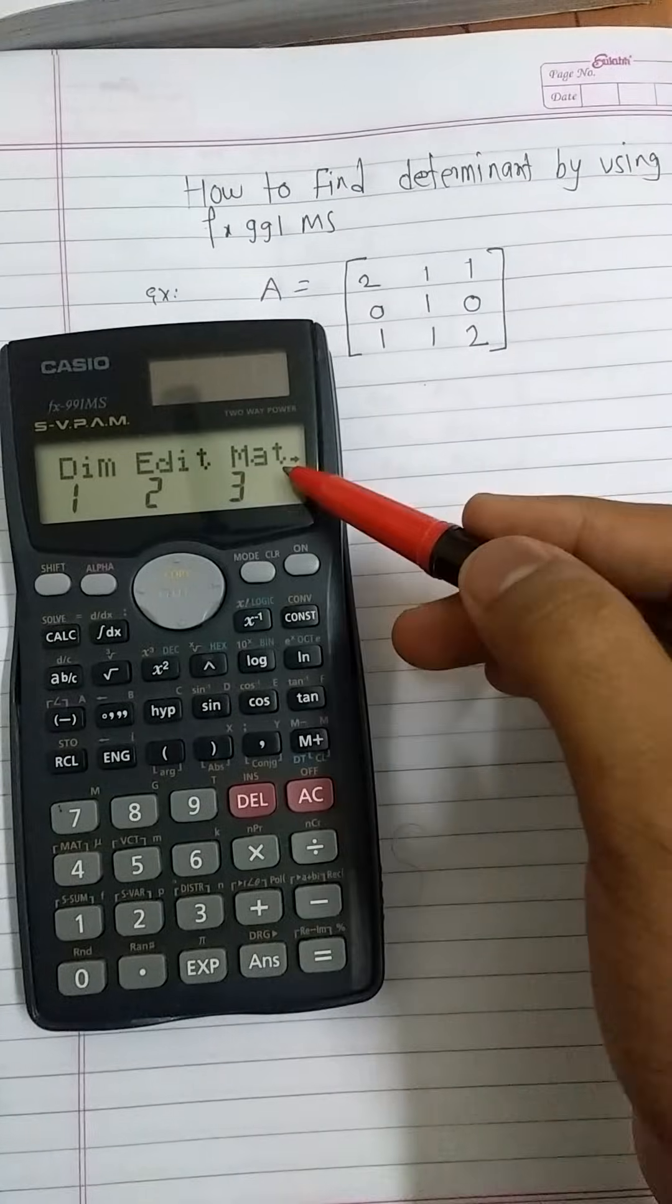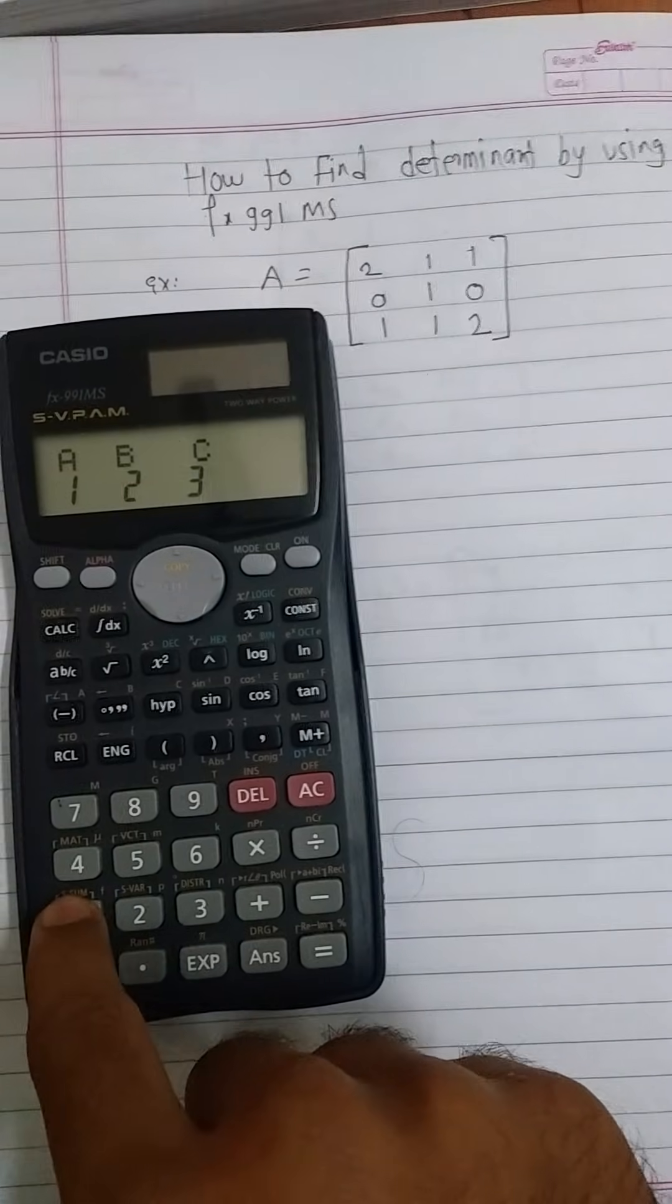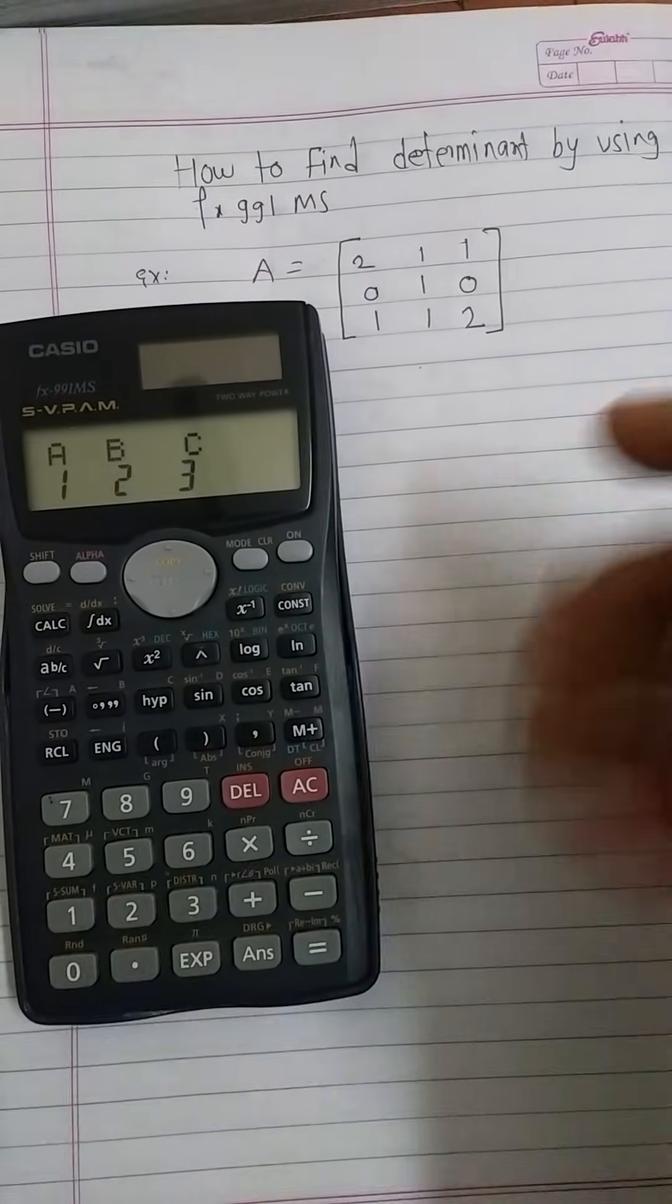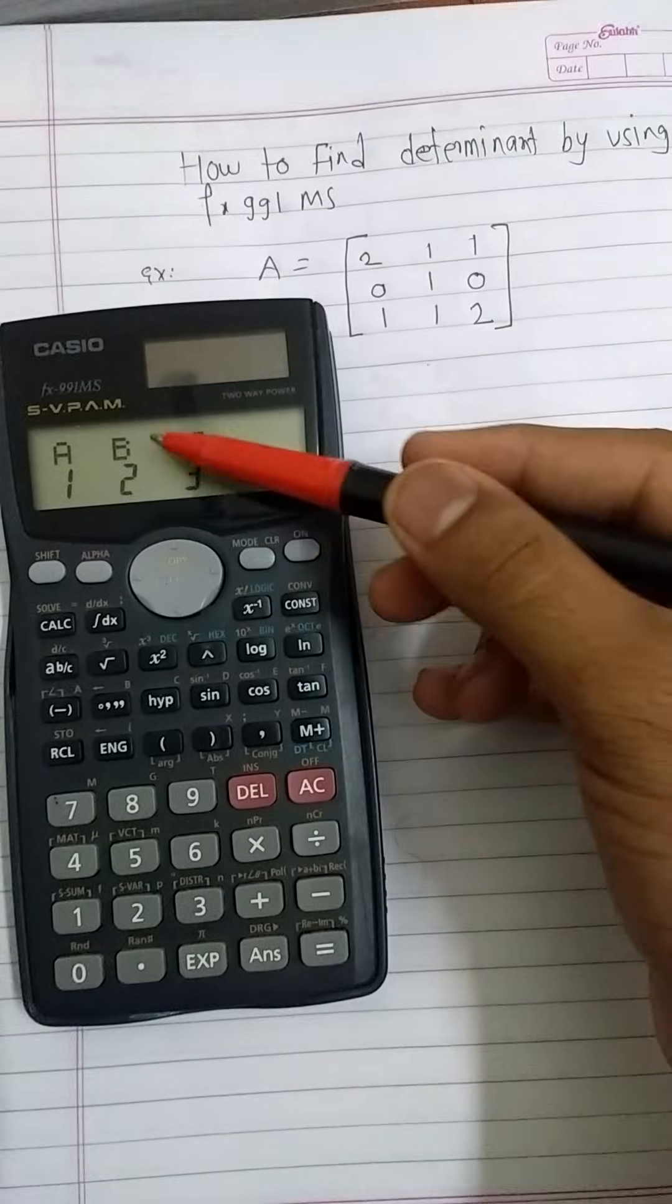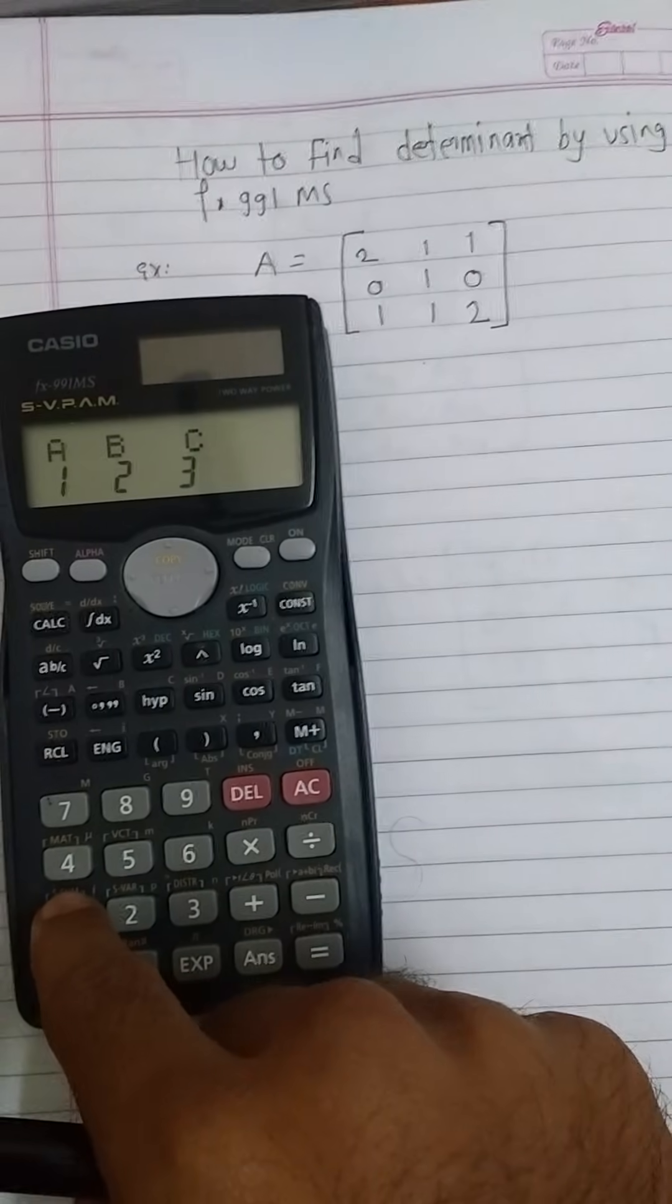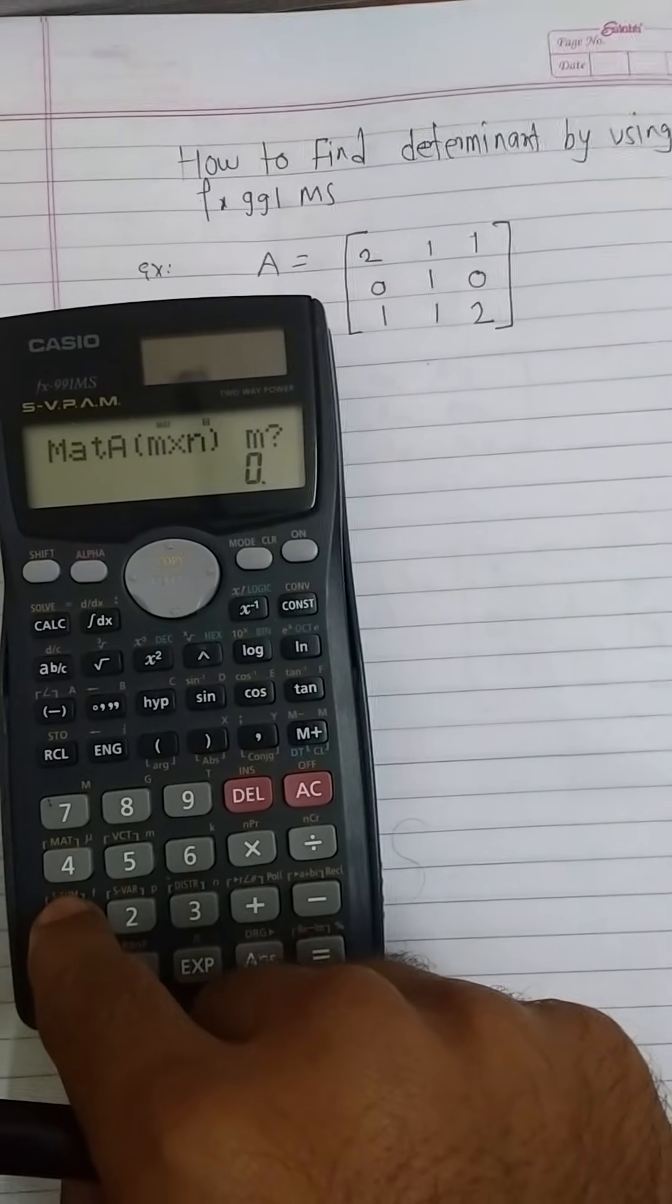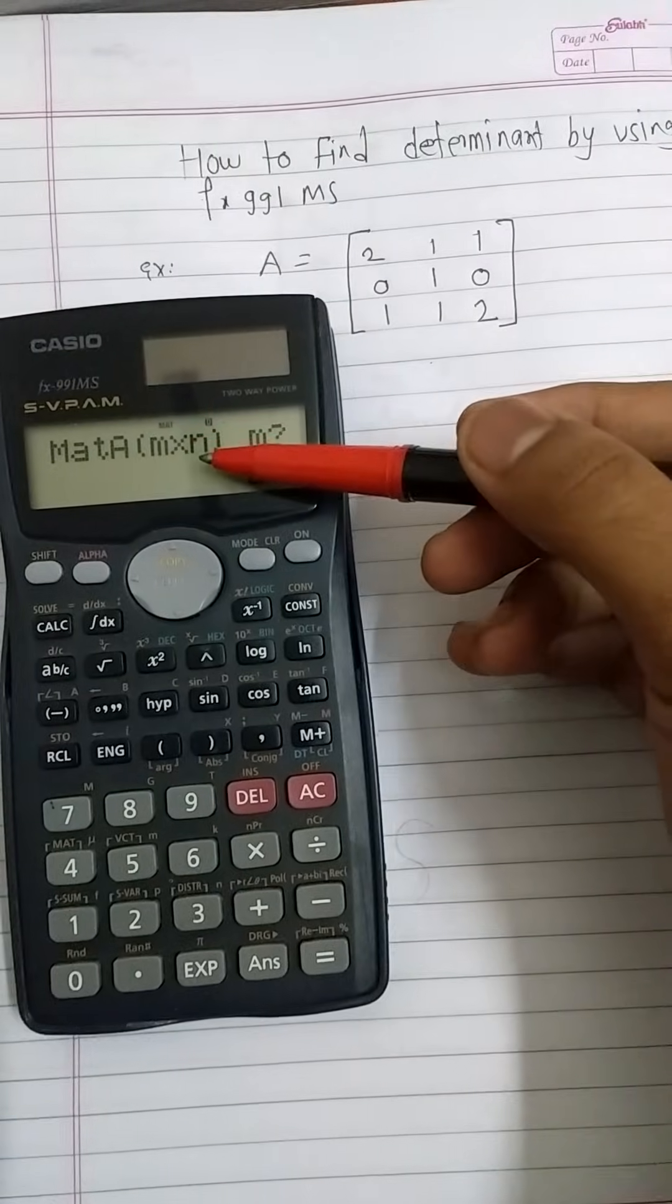Then press shift and 4. We will see three options to decide the dimension of the matrix. Press 1. You can choose any one of the matrix A, B, or C. Press 1 for A, 2 for B, and 3 for C. I am choosing 1, that is matrix A.